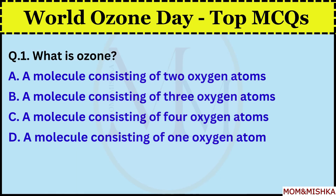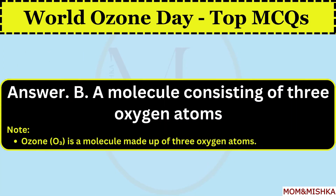What is ozone? It's a molecule consisting of 3 oxygen atoms. Option B. Ozone (O3) is a molecule made up of 3 oxygen atoms.